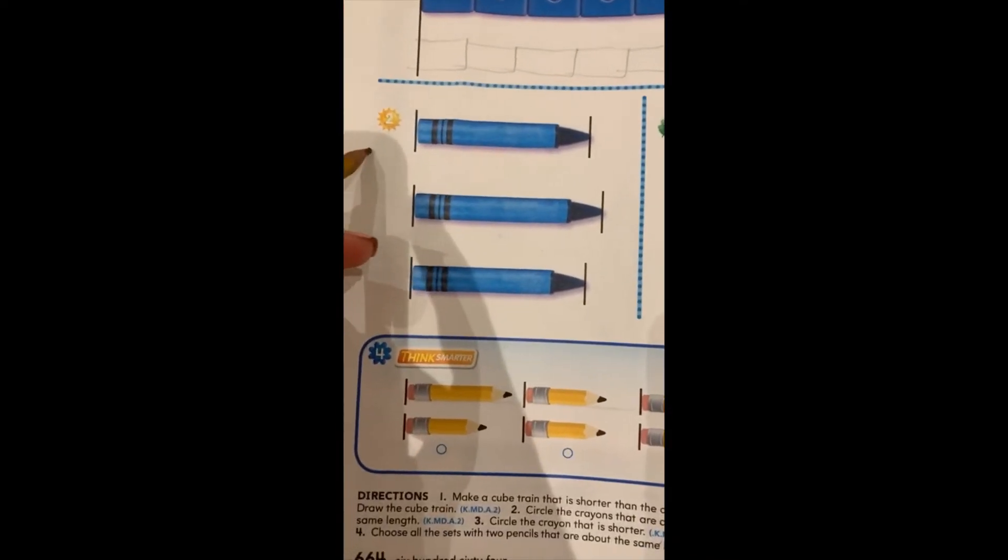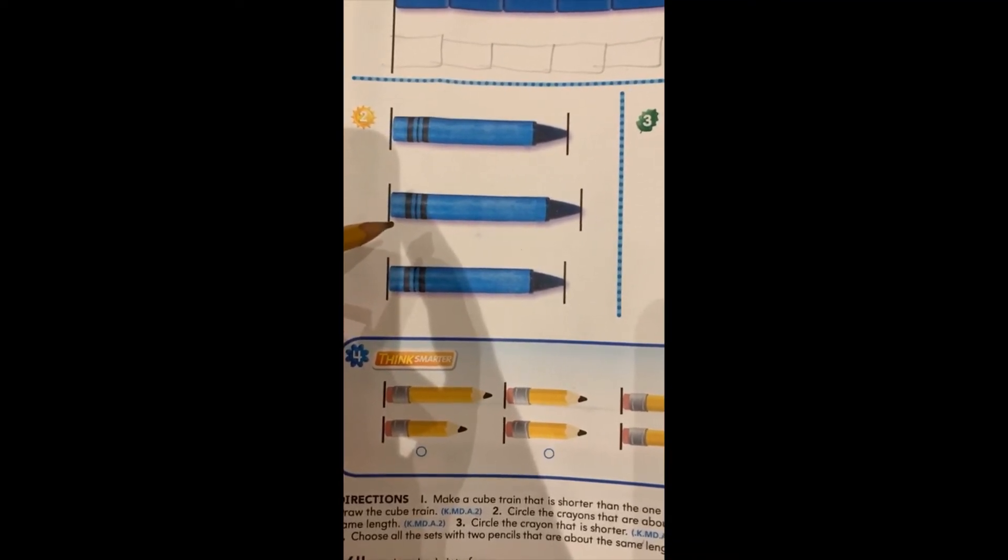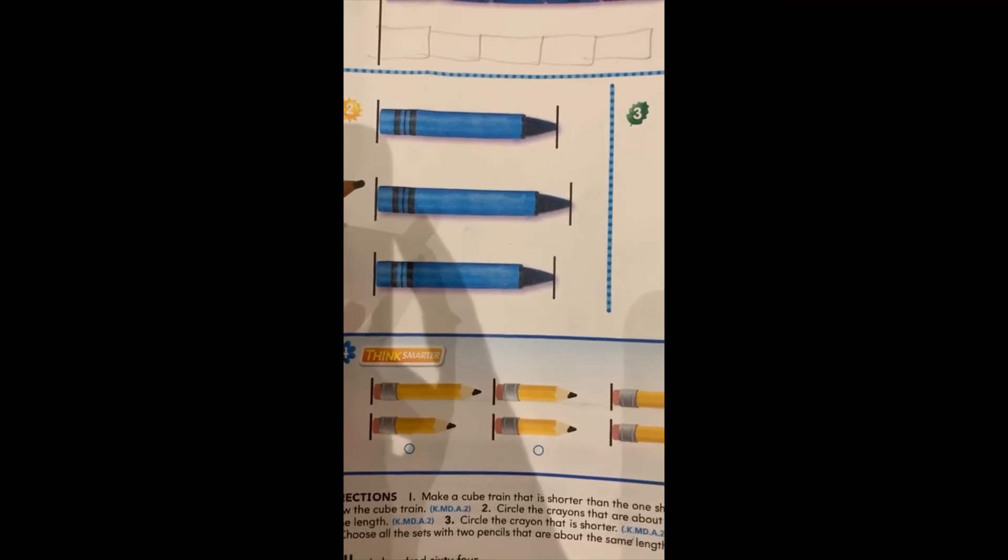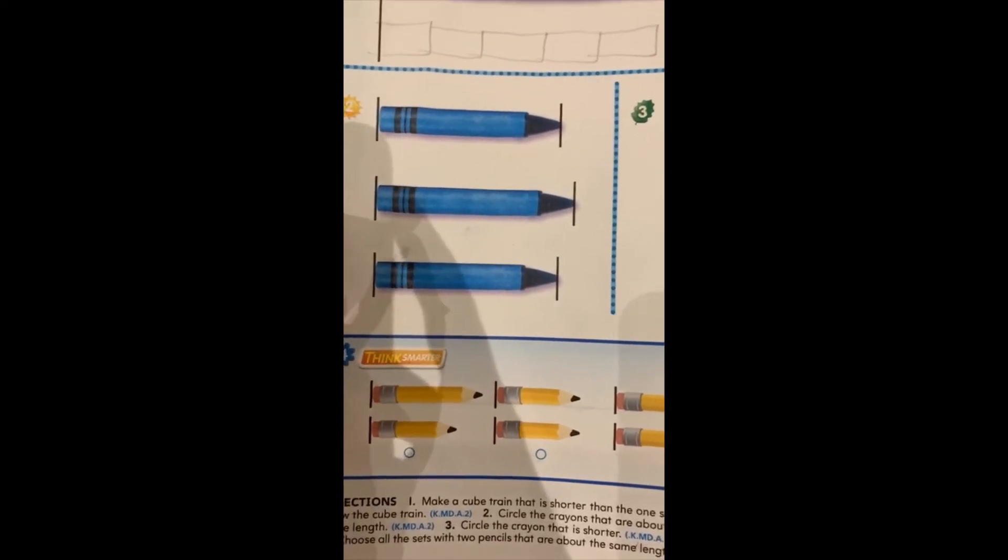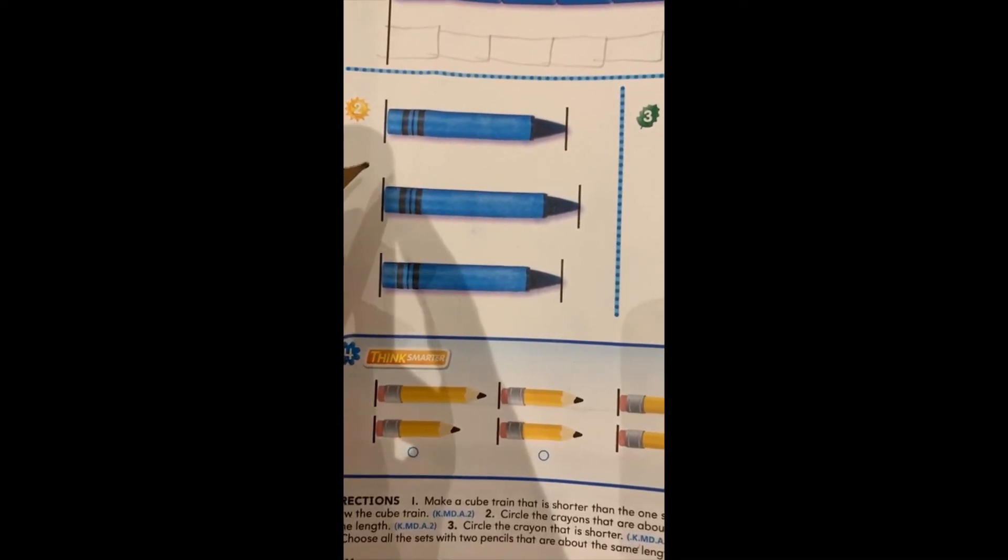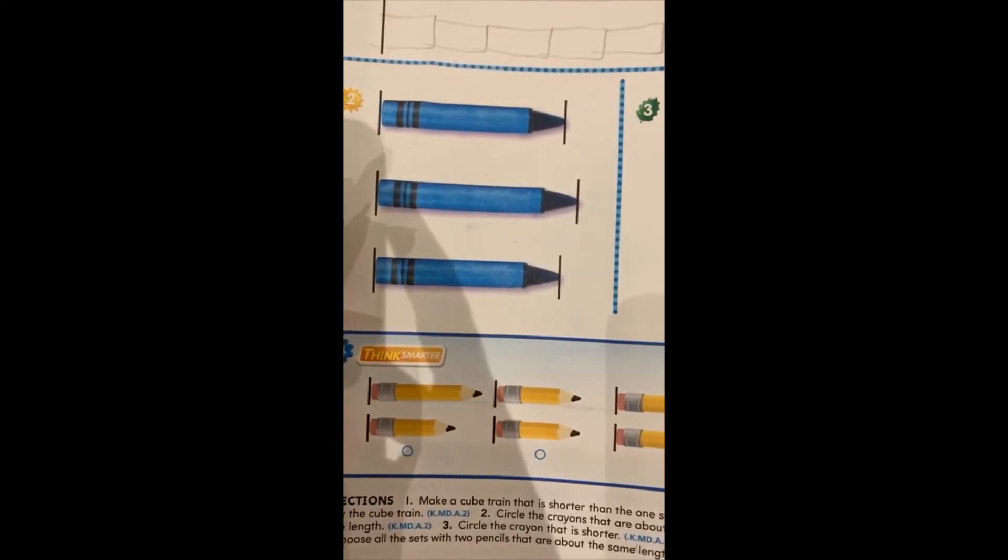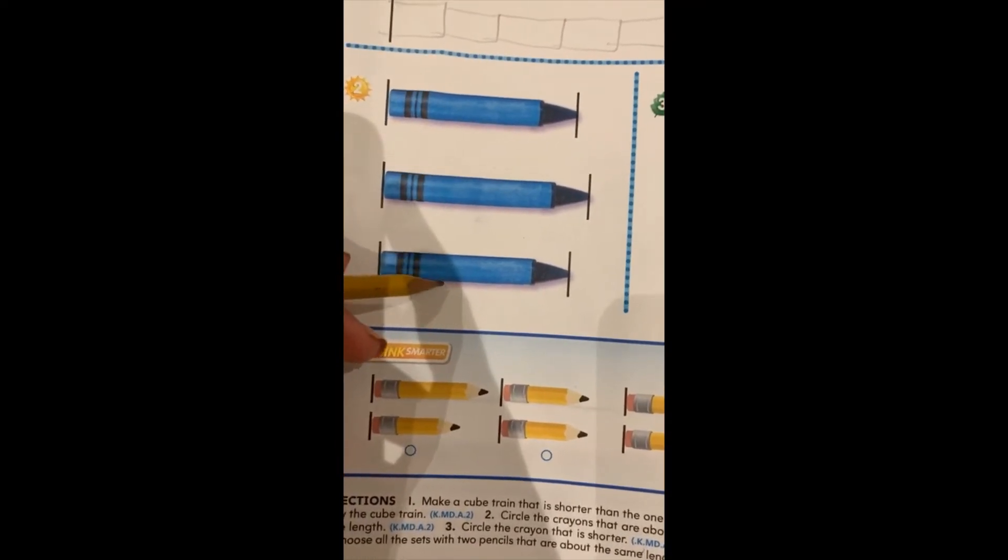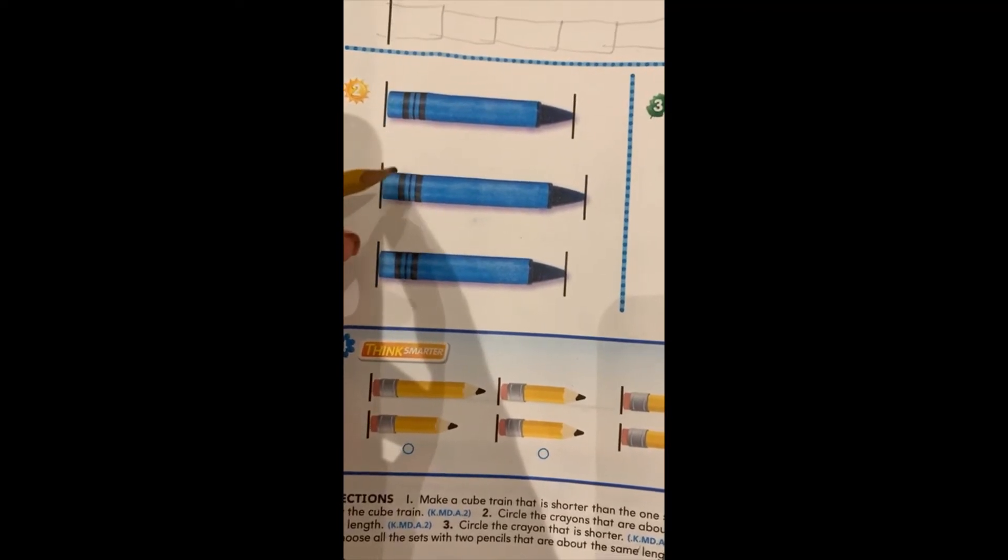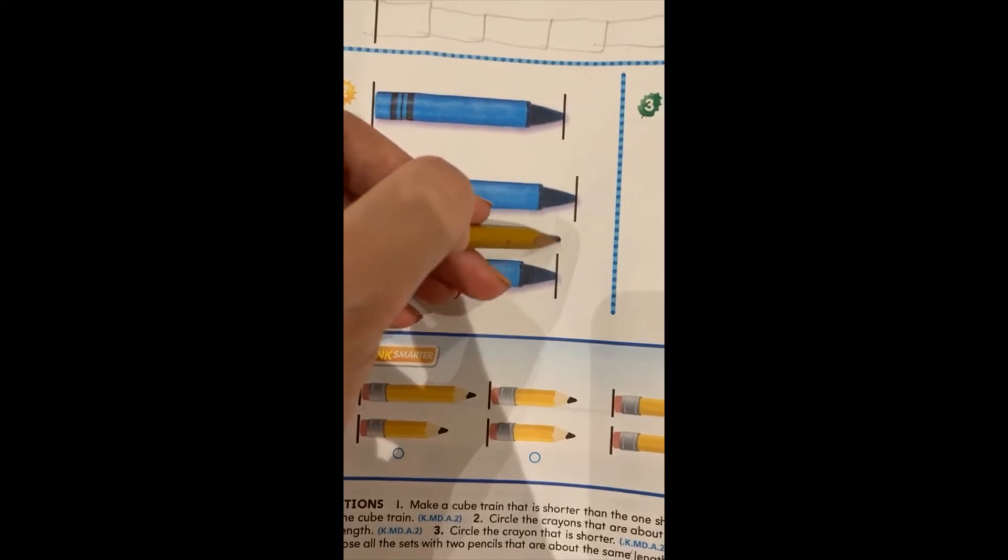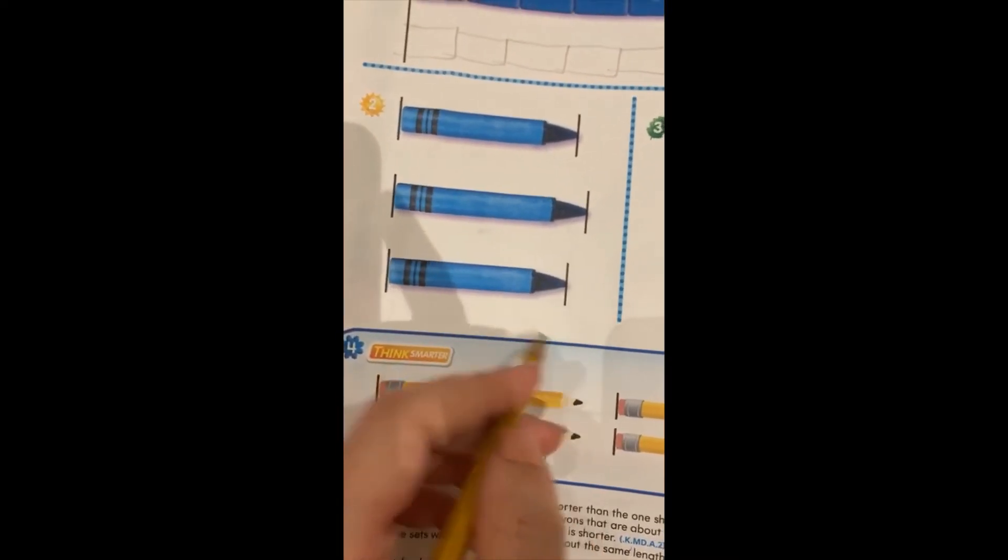Look at exercise two. Here, we have to circle the crayons that are about the same length. Remember, the ones that have the same length should start and end at the same place. Like these crayons. So, these crayons start and end at the same place. Let's circle them.